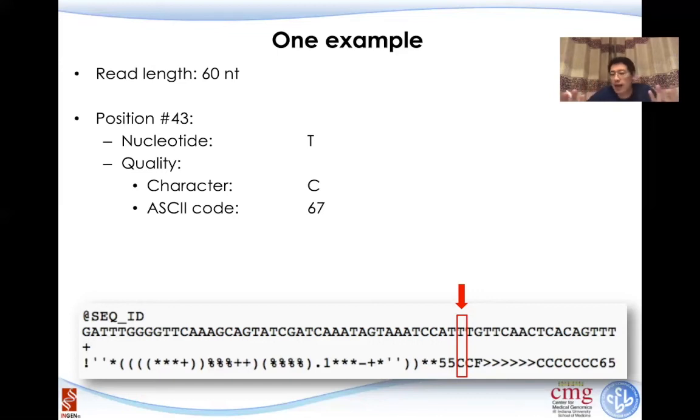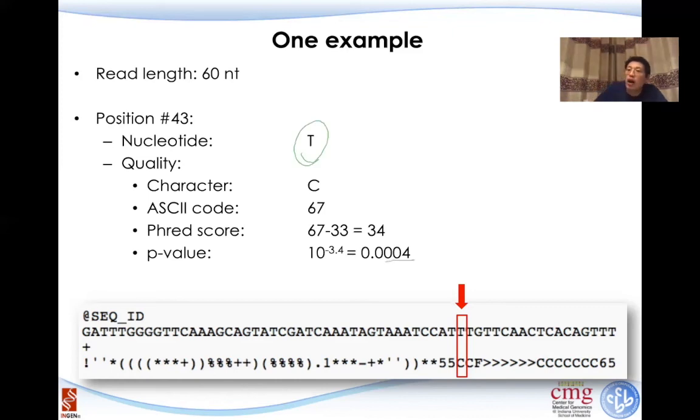This is already defined by ASCII code, and nothing we can do about it. So from this, what we can calculate is the PHRED score is 67 minus 33, which equals 34. So this is the PHRED quality score. And then if we calculate this P value, it's 10 to the power of minus 34 divided by 10, which is 0.0004, which means in this position, the sequence is very accurate. So if we report it as a T, we will have 0.04% of the chance that we are making a mistake. So this is a very high quality reading position for this particular sequence.